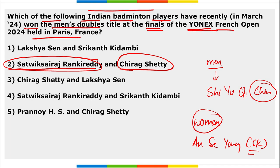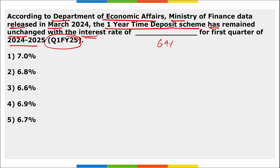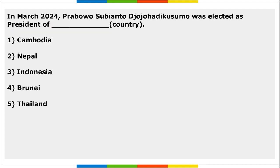According to the Department of Economic Affairs, Ministry of Finance data released in March 2024, the one-year time deposit scheme has remained unchanged with the interest rate of 6.9 percent for the first quarter of fiscal year 25.